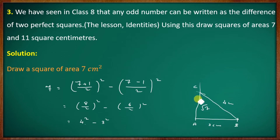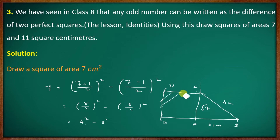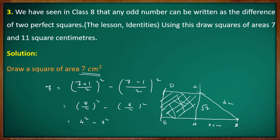The length AC is the hypotenuse, which equals root 7. So AC is the required length. From point C, using a compass, you can find the place to construct the square. The square has an area of 7.